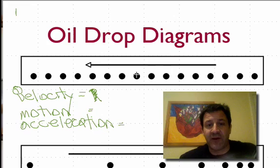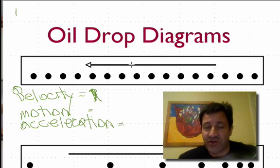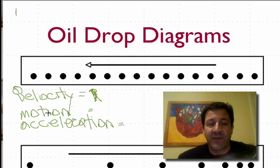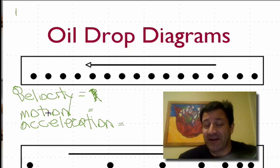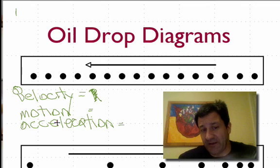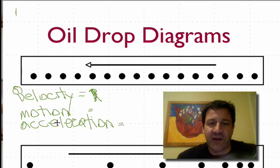By looking at these oil drop diagrams, along with the arrow that tells you the direction the object is going, you should be able to tell which way the velocity vector is pointing, whether the object is speeding up, slowing down, or has constant velocity, and which way the acceleration vector is pointing.